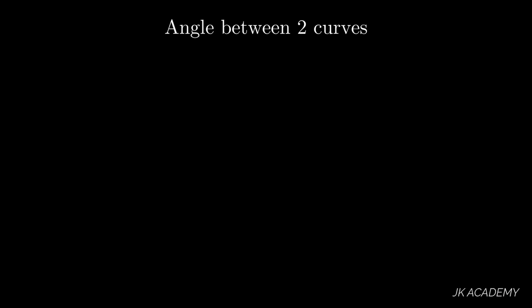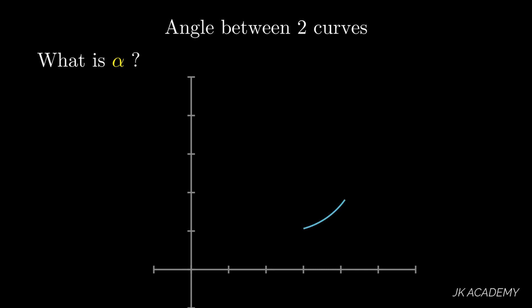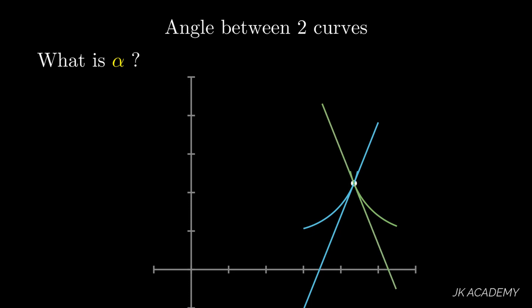Let's understand what alpha is graphically. Consider the axes, curve C1, and curve C2. We take a point on the intersection of curves C1 and C2. We draw a tangent on curve C1 through this point, and another tangent on curve C2 through this point. Alpha is the angle between these two tangents.